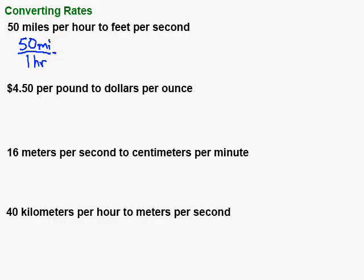Here's the thing: miles into feet. Do we know how many feet make up a mile? Yes — it's 5,280 feet in one mile. That's really just one, and I'm going to set it up so that the labels cancel out. To cancel, we want one on the top and one on the bottom. So I'll put one mile on the bottom and 5,280 feet on top. These are the same thing, just in different units, so the miles cancel out.